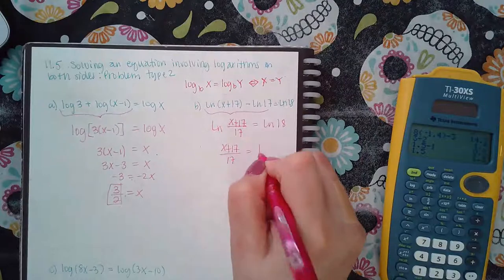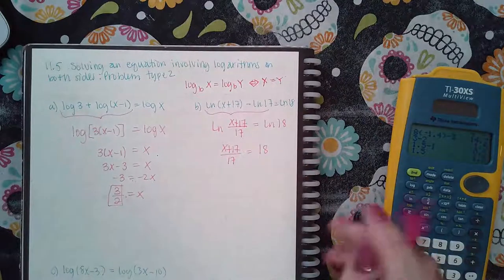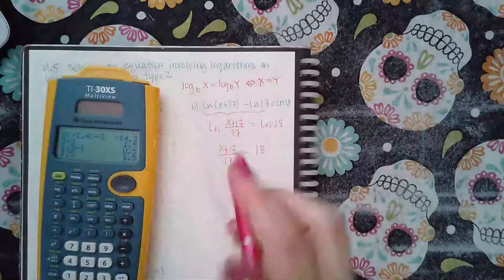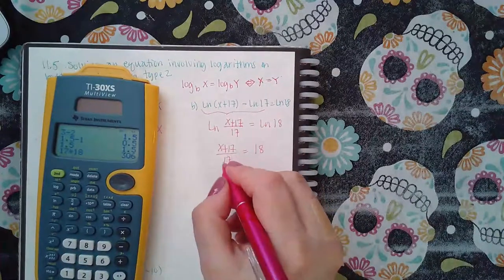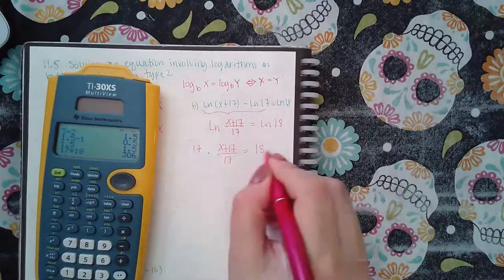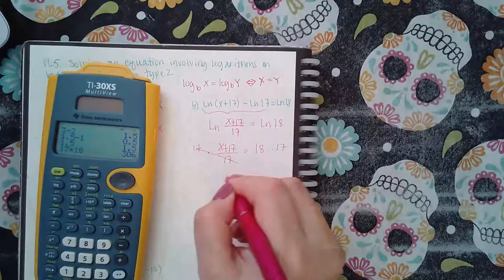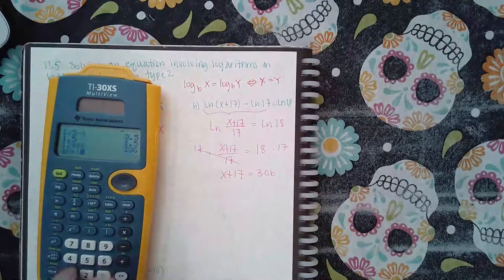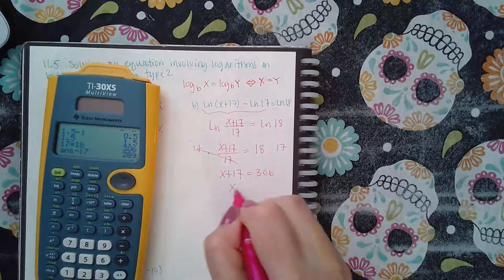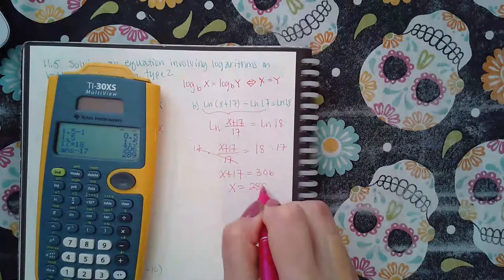If I multiply both sides by 17 I get x plus 17 equals 306, and then if I minus 17 I get that x equals 289.